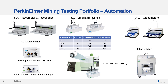Mining operations generate a lot of samples, creating a need for robust, reliable automation solutions that seamlessly integrate with our analytical platforms. PerkinElmer offers a wide range of automation platforms: the S20 autosampler and accessories for FIMS (flow injection mercury system) and FIAS (flow injection atomic spectroscopy) for hydride analysis. The SC autosampler series with integrated flow injection offering for high-throughput analysis. We also offer a wide variety of OEM automation solutions and various advanced options for inline dilution and automated sample handling and preparation.